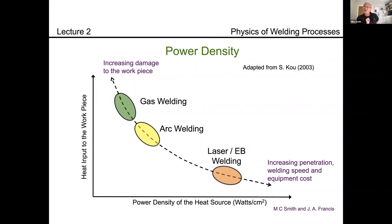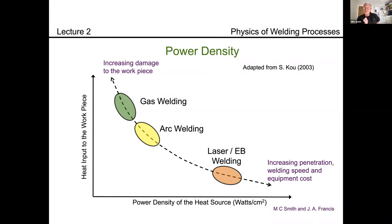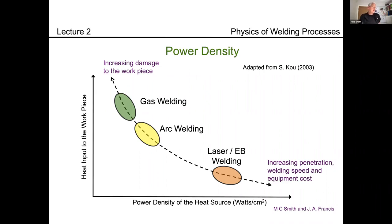That vacuum electron beam welding chamber we saw yesterday is a fairly significant piece of kit — a large high vacuum container many feet cubed — contrasted with a gas flame torch used for brazing or low temperature welding. High power density welding costs more, is quicker, has higher capital equipment costs, but tends to do less overall damage to the workpiece. Whereas low power density tends to increase damage but is cheaper.